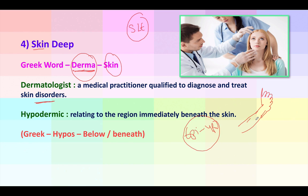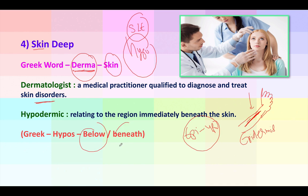Interestingly, the prefix 'epi-' means upon or towards the outer side. Skin has many layers — the outermost layer is called the epidermis. The word 'hypo' always means something below or beneath. So when injecting a needle, you go from the epidermis — the outermost layer — to the inner layer where you find the vein. That is why the needle is called a hypodermic needle. The word hypo always means below or beneath.